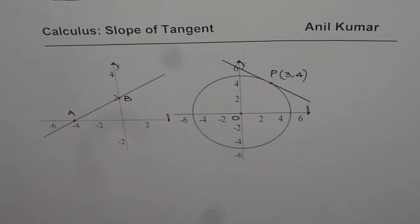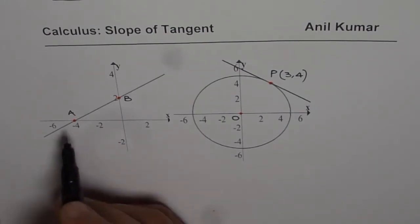Once we find slope of these two lines, one of them is a straight line going through x-intercept of minus four, y-intercept of two. The other one is tangent to a circle with radius of five, center at origin, going through the point three, four. Now let's find out slope of the given line AB.